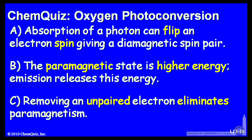Let's look at a possible explanation for each answer. A, absorption of a photon can flip an electron spin, giving a diamagnetic spin pair. B, the paramagnetic state is higher energy, so emission is required to release this energy. Or C, removing an unpaired electron eliminates paramagnetism. Think about those three possible explanations and make another selection.